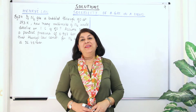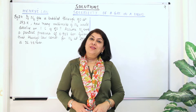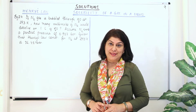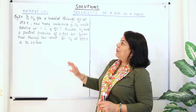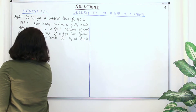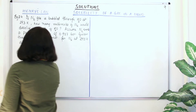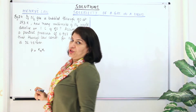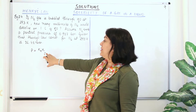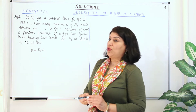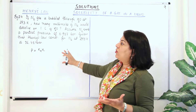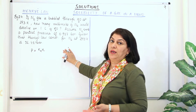Hello, I'm Seema and welcome to part 9 of the chapter Solutions. In part 8, I was telling you about the solubility of gases in liquids and I described Henry's Law. The equation for Henry's Law is P, that is partial pressure of a gas, is equal to KH, that is the Henry's Law constant, into x which is the mole fraction of the solute. Today we are going to do three numerical problems based on Henry's Law.